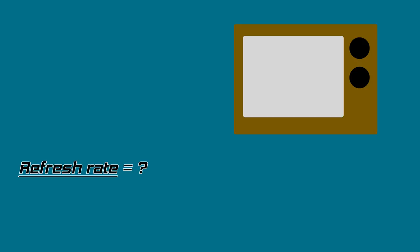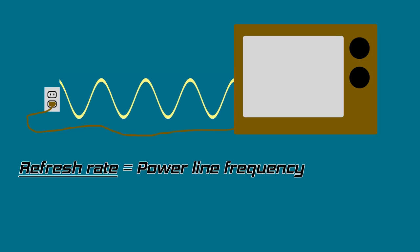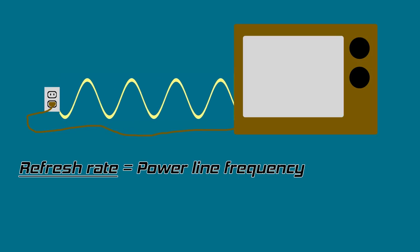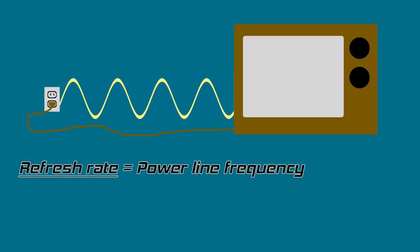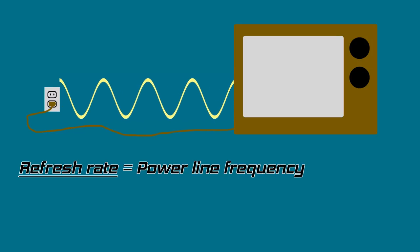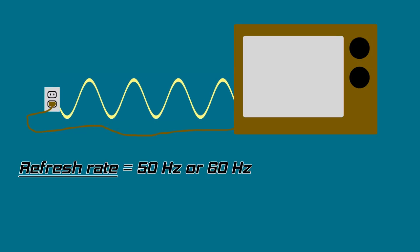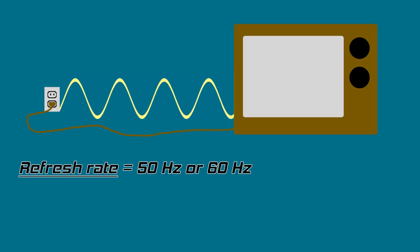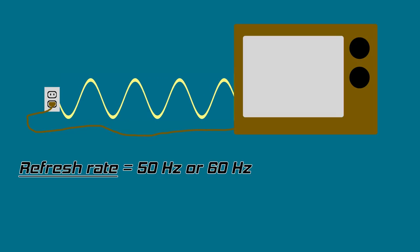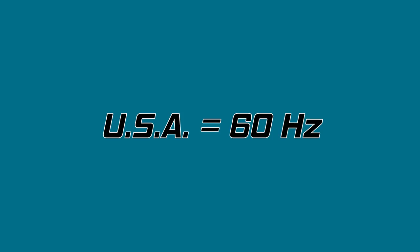When television came into being, the refresh rate was decided to be the same as the power line frequency. The AC power in your home has a frequency at which an oscillating current arrives when it is transferred from the power station to your home. This frequency is either 50 hertz or 60 hertz, depending on where you live in the world. As I live in the United States, this frequency is 60 hertz. From this point, my numbers will come from a US point of view, but the fundamentals are the same no matter where you live.